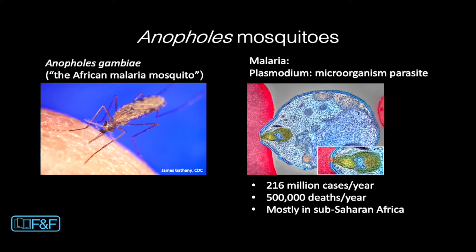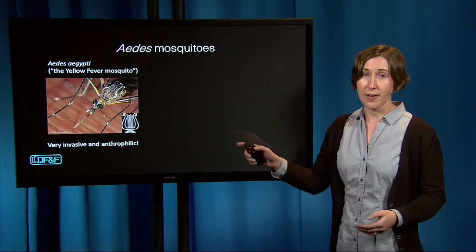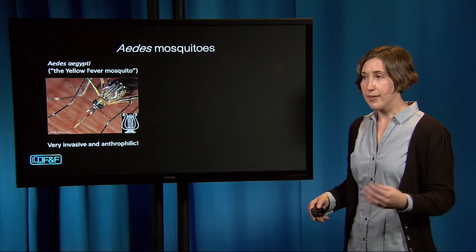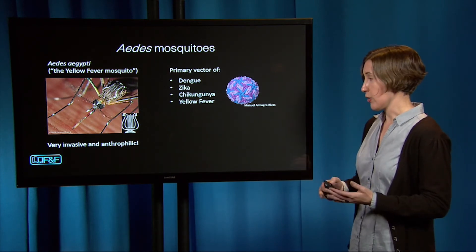Fortunately, there has been some improvement with prevention and treatment this decade. On the other hand, the diseases carried by Aedes, and especially Aedes aegypti, have been on the rise. You can recognize Aedes aegypti by the nice lyre shape on its thorax. It's very invasive — it lays eggs in tires and human-made containers, which allows it to spread really easily along human transportation networks. They're also anthrophilic, meaning human-loving, so they prefer to bite people. That makes them really powerful vectors for the diseases they carry: dengue, Zika, chikungunya, and yellow fever.